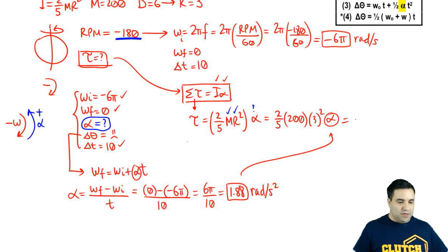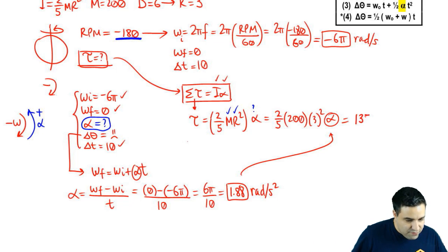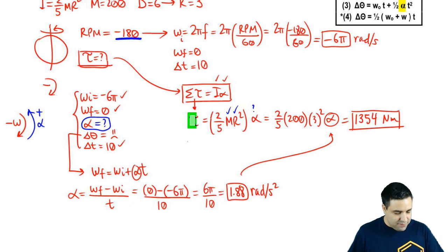Now I can plug this in here, and we are done. So if I multiply all of that, and then I multiply that by 1.88, I should get 1354 newton meters. That's it. That's the final answer.